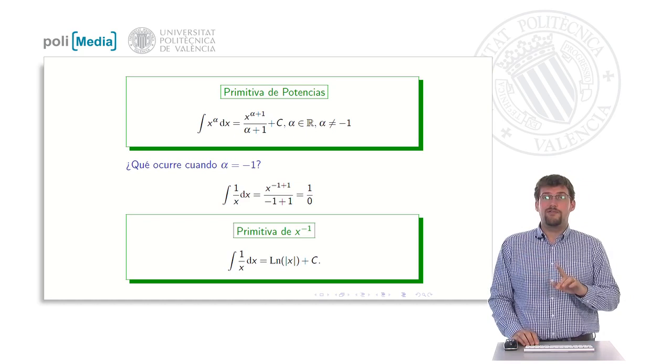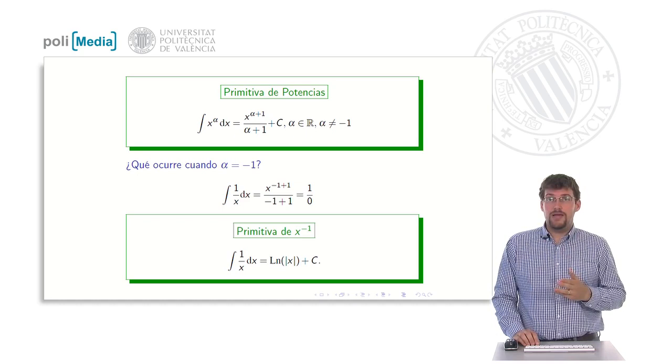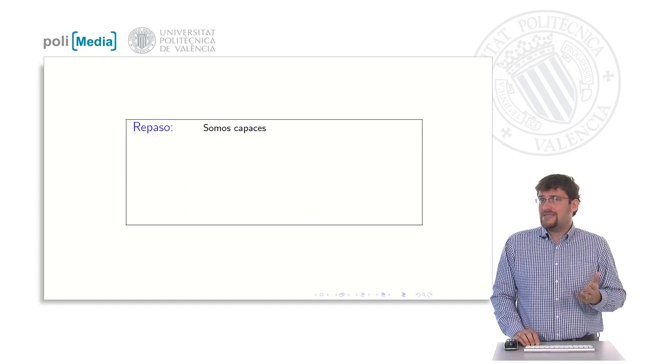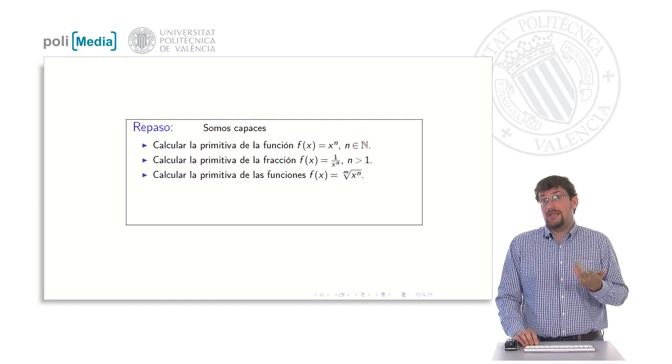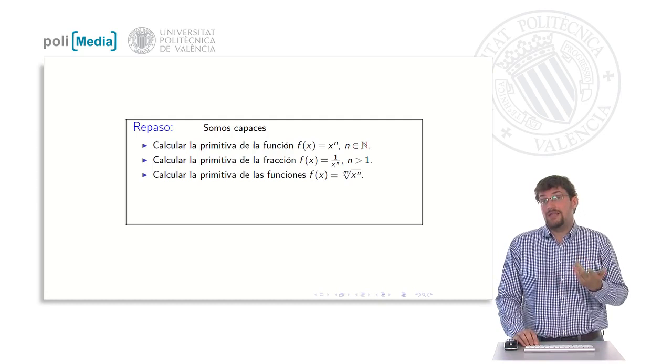Again, if we derive the natural logarithm, we will have the 1 divided by x. Well, so having said that, these two antiderivatives must be remembered, we must understand them well. And all the way up to here, after today's lesson, we are able to calculate the antiderivatives of functions in the form of x raised to the power of n, as well as calculate the antiderivative of the fraction 1 divided by x raised to the power of n, of radicals in general, of any power as long as alpha is different from minus 1, and when it is minus 1 as well.